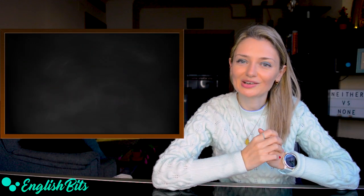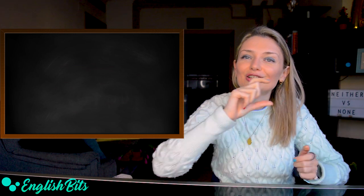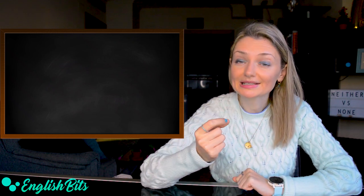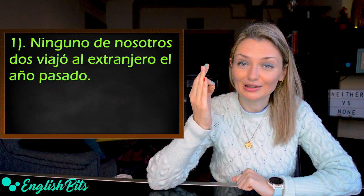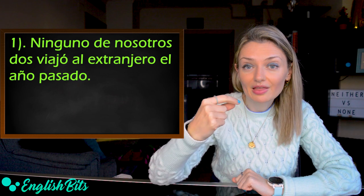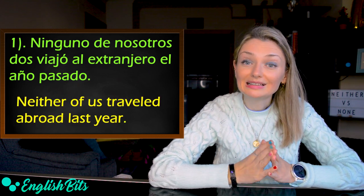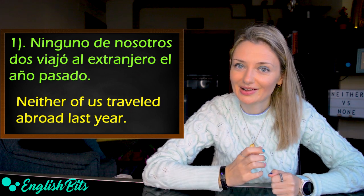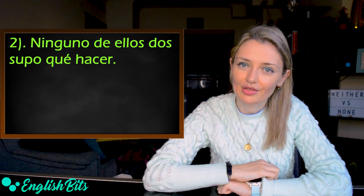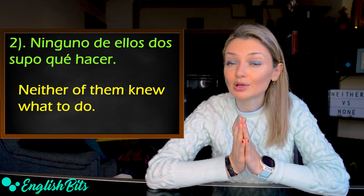And now if you're a Spanish speaker, I've got an activity for you. I've prepared 11 sentences and you're going to translate my sentences from Spanish into English and we're going to practice everything we've learned today. So the first sentence I want you to translate from Spanish into English is: Ninguno de nosotros dos viajó al extranjero el año pasado. If you want, you can pause the video, you can write it down, and now I'm going to give you the correct sentence. And the correct sentence would be: neither of us traveled abroad last year. If it's correct, well done, and put a tick. The second sentence: ninguno de ellos dos supo que hacer.